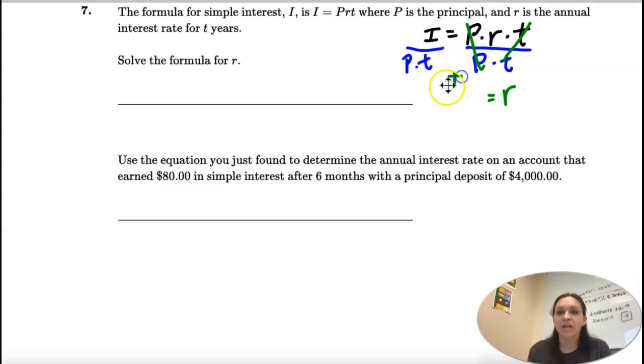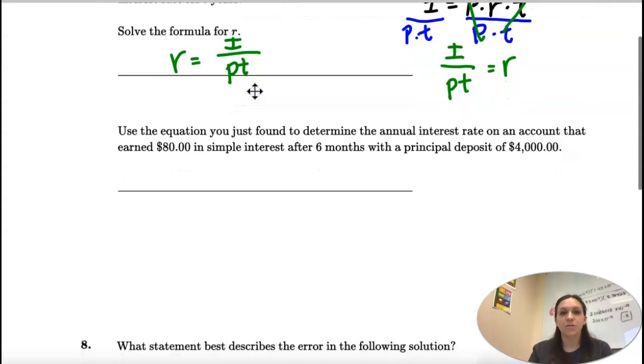So I have I divided by P times T, but remember we just stick them right next to each other and that means times. So R equals I divided by PT. Okay, that's the first part.